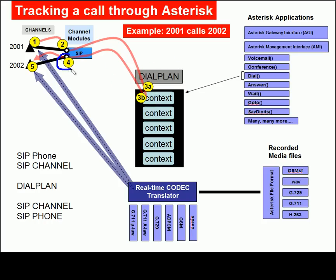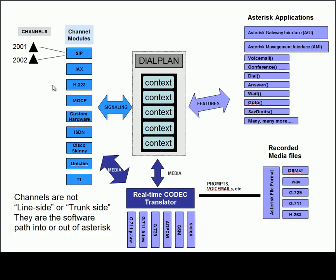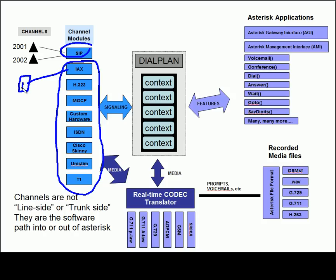This channel number four is actually referred to by two separate components: SIP, which is the arbitrary name Asterisk chose for this particular software module, and then a slash followed by the channel ID. I'm going to call this channel ID 2002, and the channel ID for number two up here I'm going to make 2001. Bear in mind that call flow does not have to be restricted to just SIP. There are many other software modules that can be loaded to open up an IAX channel, for instance, which is where we would connect to another Asterisk box using the Inter-Asterisk Exchange protocol.